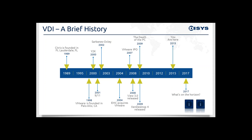VDI: a brief history. In 1989, Citrix WinFrame 1.6 was released. It ran on a multi-user version of NT 3.51. Citrix quickly released MetaFrame 1.8 for NT 4.0 Terminal Server Edition. This was really groundbreaking in 1997 when we deployed it in the student labs at Georgetown University. The idea of being able to deploy a hosted shared desktop or a published application was really powerful.